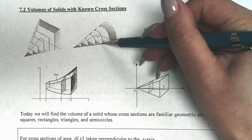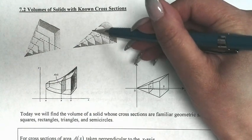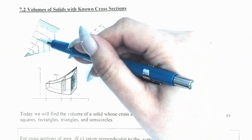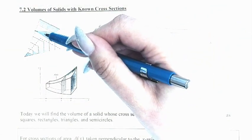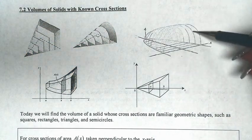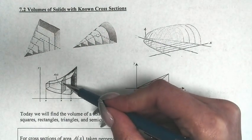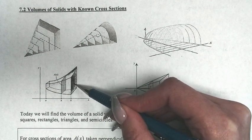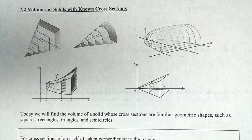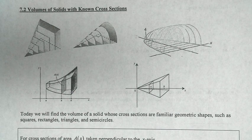this one is a semicircle — when you slice this cone, you are going to have a semicircle. In this situation we have a pyramid, a pseudo pyramid, and when you do the cross section you are going to have something like a rectangle. Over here you have a semicircle and here the cross section is another rectangle, and here you can clearly see that the shaded region is a rectangle. Today we will find the volume of a solid whose cross sections are familiar geometric shapes such as squares, rectangles, triangles, and semicircles.